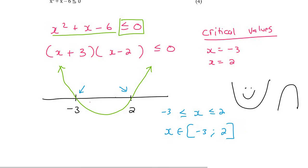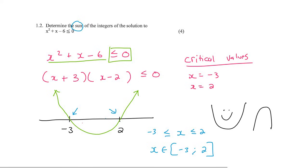They say, determine the sum of the integers of the solution. So the solution is from -3 up to 2. So think about that. What are all the integers between -3 and 2? Well, there's -3, -2, -1, 0, 1, and 2. Those are integers, and they said determine the sum, so we literally just add them together. So if you had to go add -3 plus -2 plus -1 plus 1 plus 2, your answer would equal to -3 if you had to go add them all up. And so that is the answer for this question.